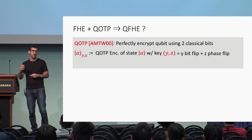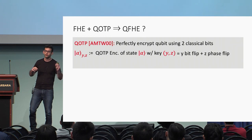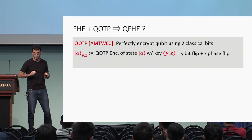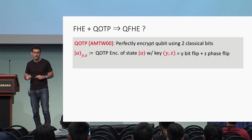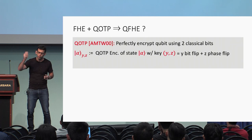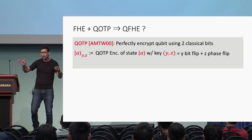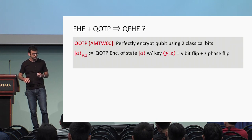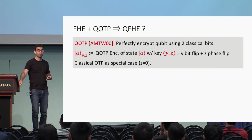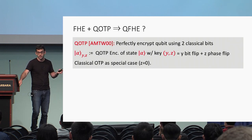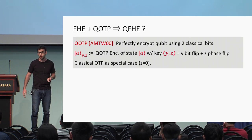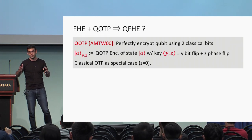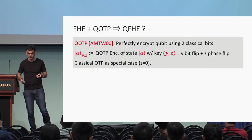In the quantum one-time pad, you use one bit to do exactly the same thing as the classical one-time pad: you use bit y to do a bit flip of the quantum register, and bit z to do a phase flip. Importantly, the classical one-time pad can be derived as a special case of the quantum one-time pad when you take bit z to be zero. So a classically one-time padded classical value can be seen as a quantumly one-time padded value.